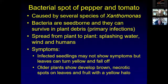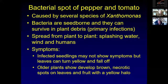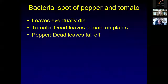Usually bacterial spot is not a problem if it stays dry, but if you have a thunderstorm or rain event come through, you will usually see symptoms about two days later. On infected seedlings, the leaves can turn yellow and may fall off — it might look like under-irrigation but it could be contaminated seed showing the first symptom. On older plants, brown necrotic spots develop on the leaves as well as on the fruit. On tomatoes the brown spots are surrounded by a yellow halo. Eventually the leaves die; on tomatoes dead leaves remain on the plant, while on peppers they fall off.